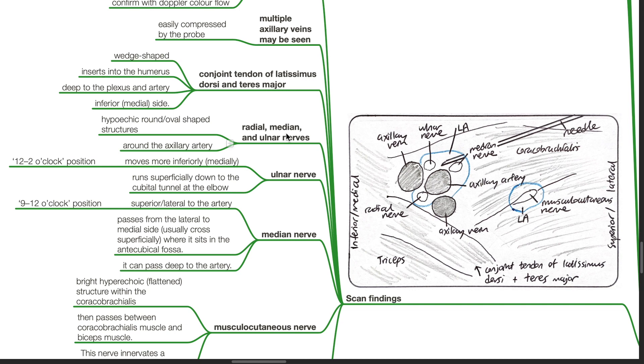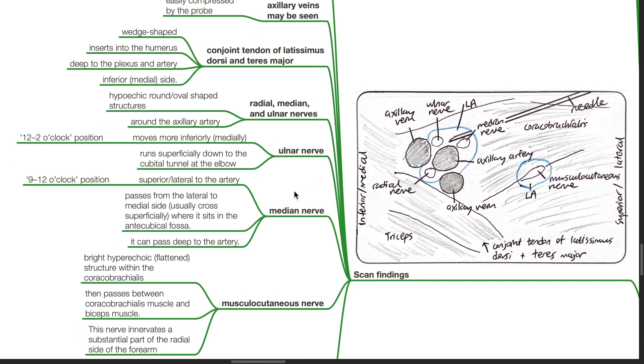The radial, median, and ulnar nerves are hypoechoic round oval shaped structures around the axillary artery. The ulnar nerve at the 12 to 2 o'clock position moves more inferiorly medially and runs superficially down the cubital tunnel at the elbow. The median nerve is at the 9 to 12 o'clock position and it is superior and lateral to the artery. It passes from the lateral to the medial side and usually crosses superficially where it sits in the antecubital fossa. It can pass deep to the artery.